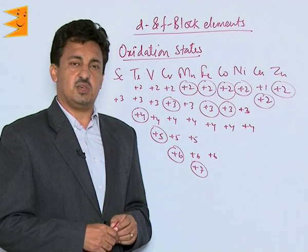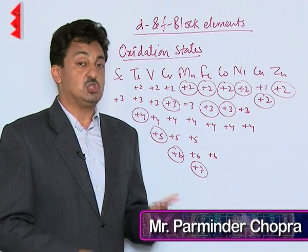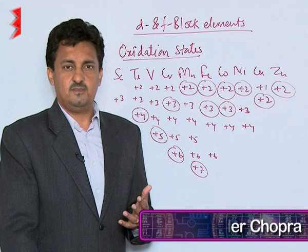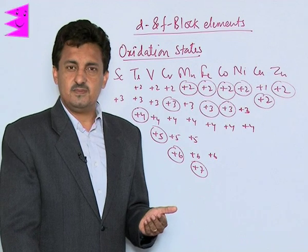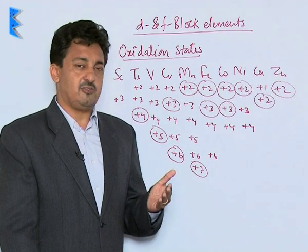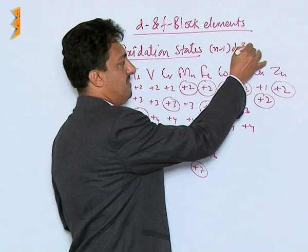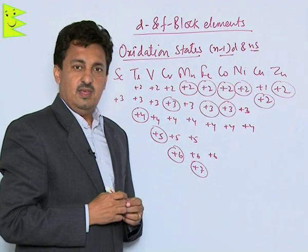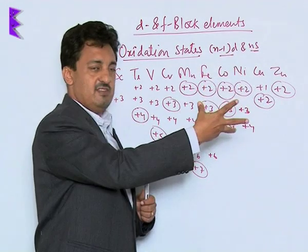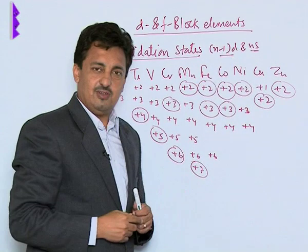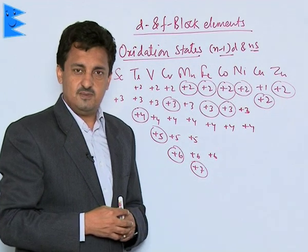Let us discuss the oxidation states of the d-block elements. The transition elements show variable oxidation states — their oxidation state varies from +2 and can go up to +7 or even +8. The main reason they show variable oxidation states is because the energy difference between (n-1)d and ns subshells is very small. Since the energy difference is very less, the electrons from the (n-1)d are also available for participation in reactions along with the ns electrons, giving more choice of electrons and resulting in variable oxidation states.